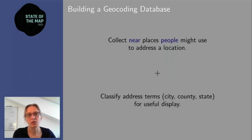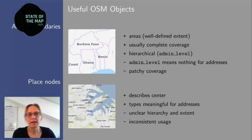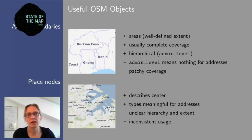Building a geocoding database means collecting all the places you want to find, then for each place finding the surrounding places which describe where it's located. To display places you also need to classify them — give them address terms like city, county, state — so you get a hierarchy useful for display. The best objects to use are administrative boundaries and place nodes. Boundaries are nice because they're well-defined areas, normally with complete coverage and no holes, and they give you a hierarchy via admin levels. The problem is admin levels are just numbers — they don't carry meaning like 'city' or 'county.'